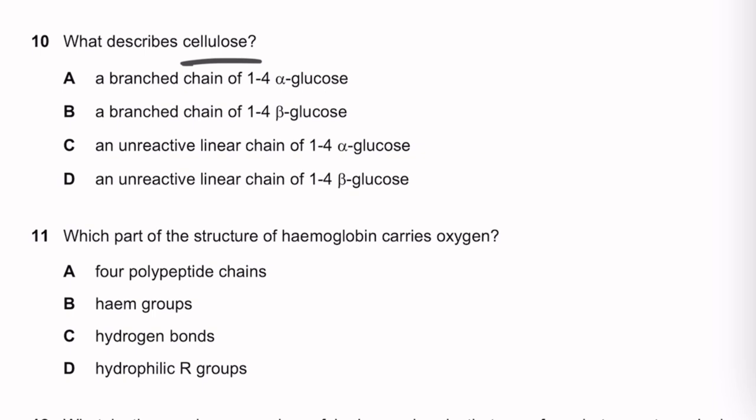Question 10 describes cellulose. It is an unreactive linear chain of 1-4 beta-glucose. Not branched, not alpha-glucose. The answer is C.